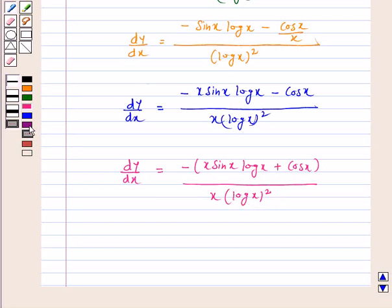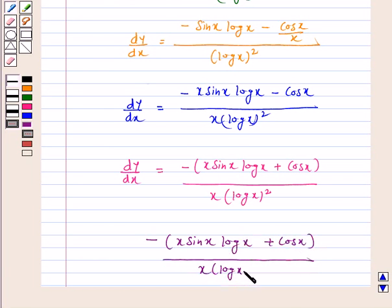The answer for the derivative of cos x upon log x is minus x sin x log x plus cos x upon x log x whole square, where x is greater than 0.